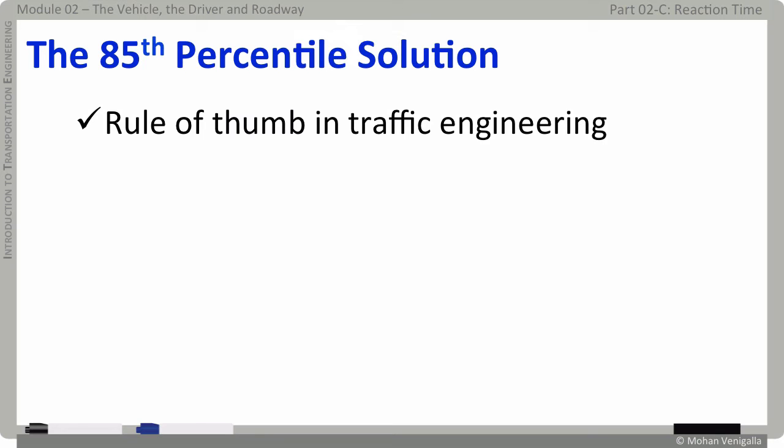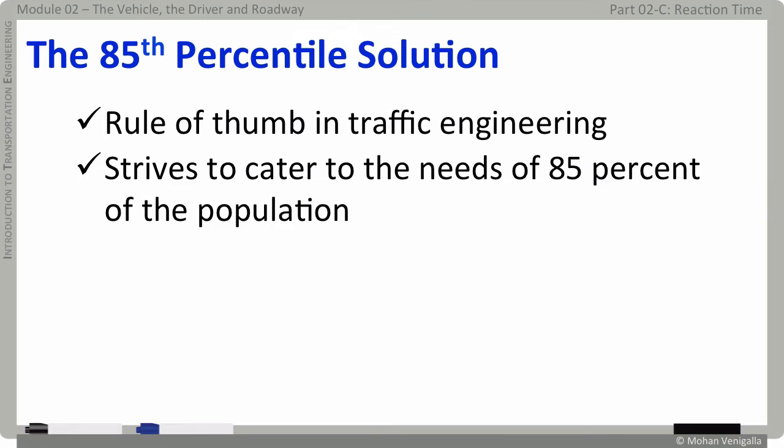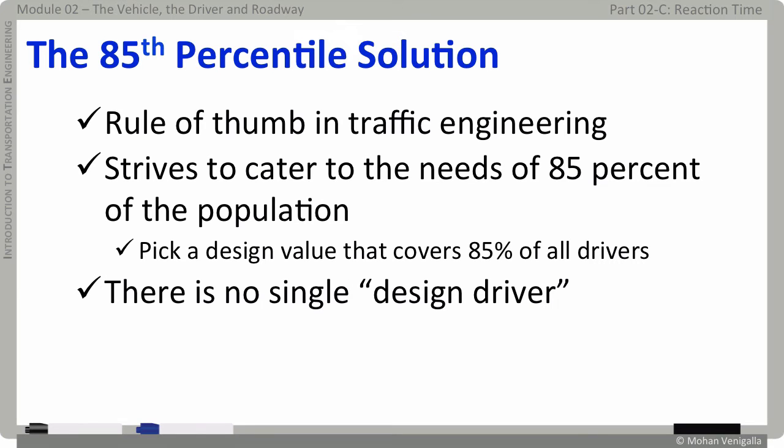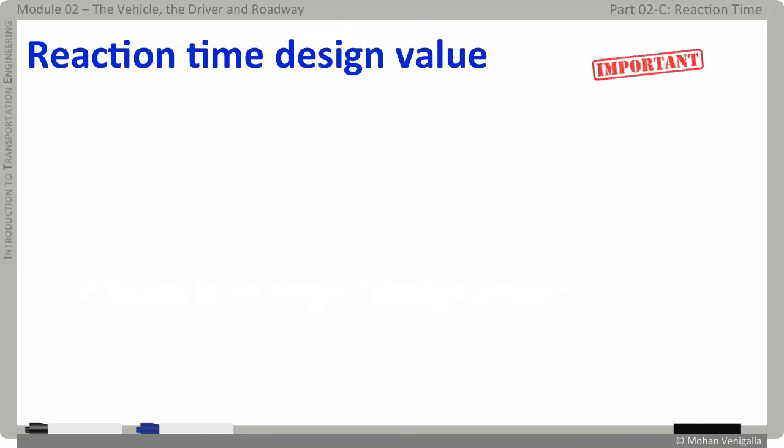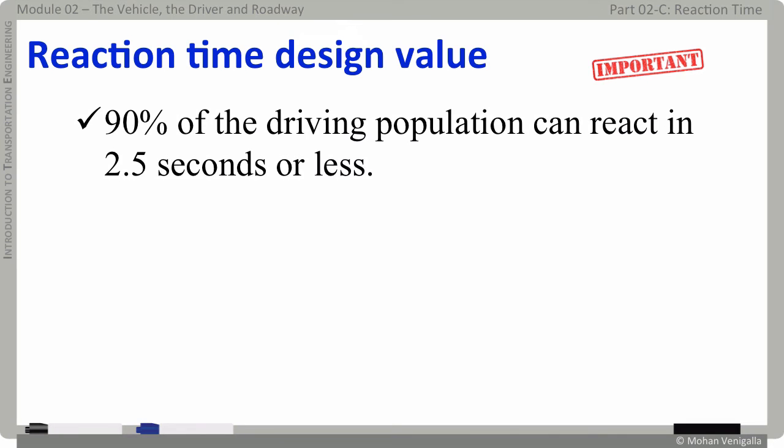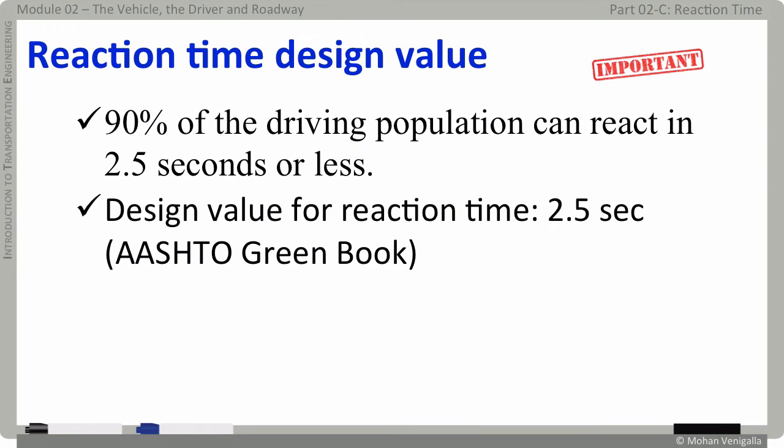There is a rule of thumb in traffic engineering. It strives to cater to the needs of 85% of the population. Use this thumb rule and pick a design value for reaction time that covers 85% of all drivers. In other words, there is no single design driver for reaction time. Extensive research has shown that 90% of the driving population can react in 2.5 seconds or less. AASHTO Green Book recommends, therefore, the use of 2.5 seconds as the design value for reaction time and all states use the same value in their design guidelines.